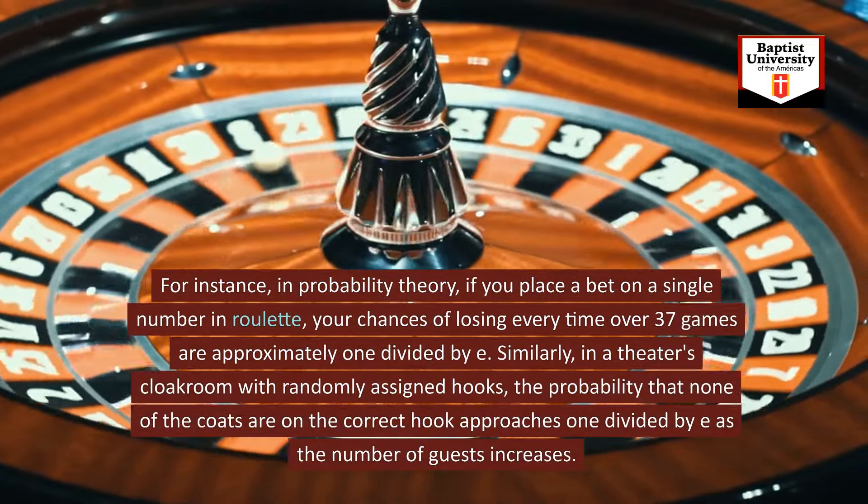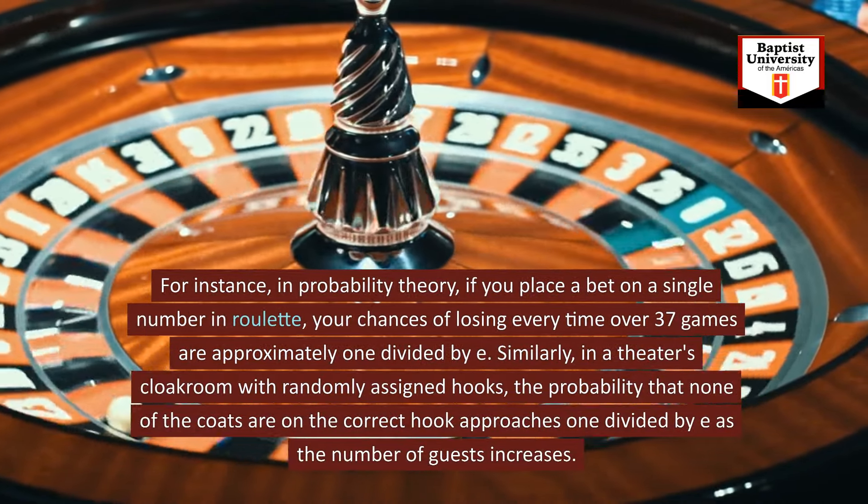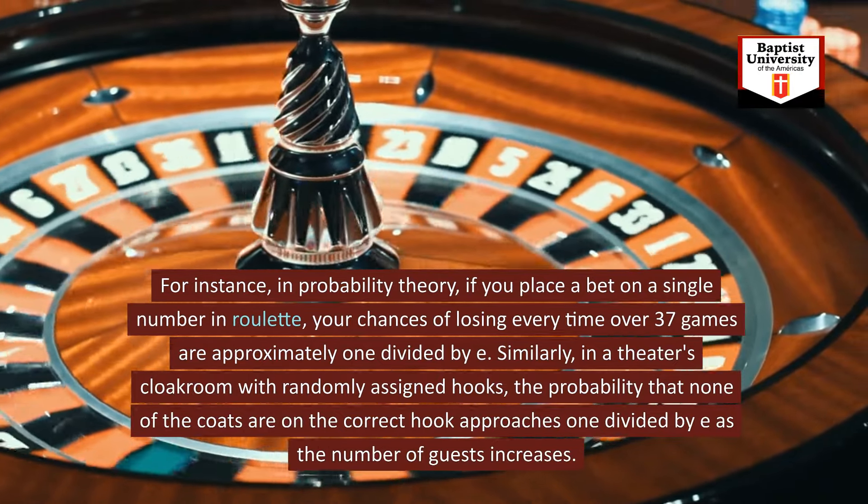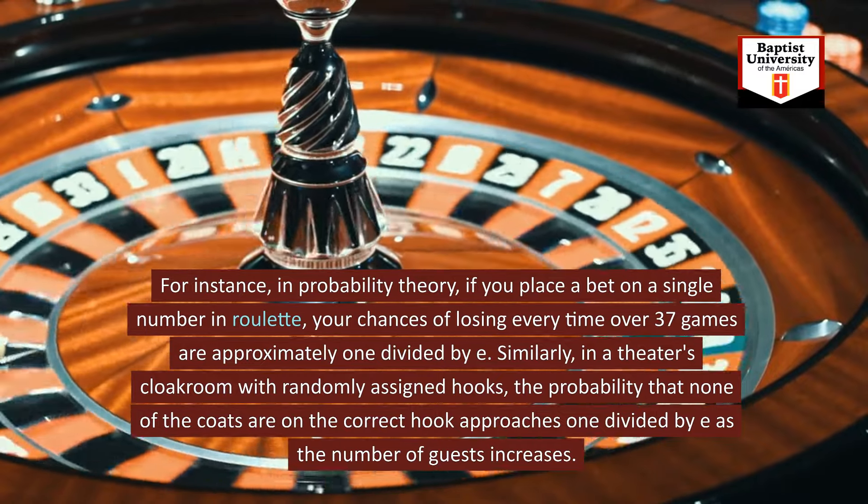For instance, in probability theory, if you place a bet on a single number in roulette, your chances of losing every time over 37 games are approximately 1 divided by E.